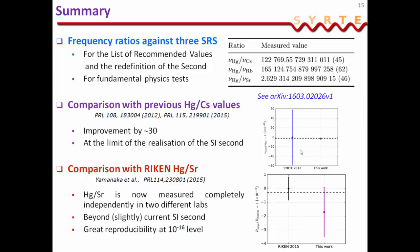And finally, we measured the mercury to strontium frequency ratio for the second time after the frequency ratio that was measured in the group at RIKEN. I would like to point out that these two measurements are completely separate. They have been done in two completely independent labs. And the reproducibility at the 10^-16 level is quite good.